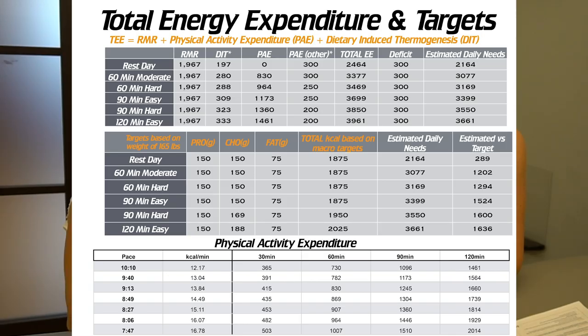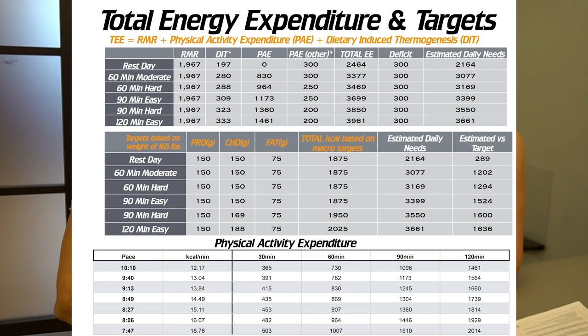Physical activity expenditure comes from workouts — I have your paces, calories per minute at each pace, and estimated totals for 30, 60, 90, and 120 minutes. Then there's PA 'other' — getting dressed, walking around — which is an estimate; for some people this could be close to a thousand calories depending on their day. In cities we tend to move more. People usually spend more energy in this category on a rest day than on a longer run day.